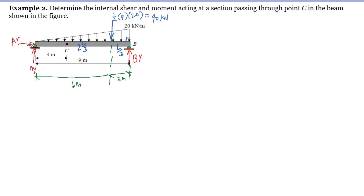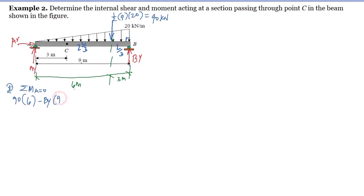To solve for the reaction at B, we take the moment at point A equal to zero, taking the clockwise direction as positive. We have the resultant of the load, 90 kilonewtons, multiplied by the moment arm of 6 meters. BY is counterclockwise, so it is negative, multiplied by the moment arm of 9 meters, and this equals zero.